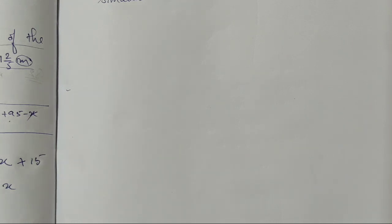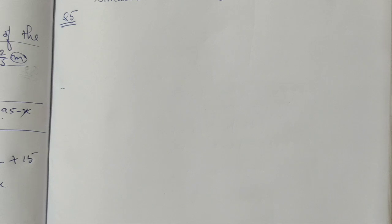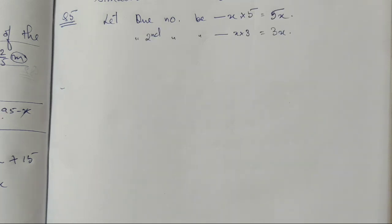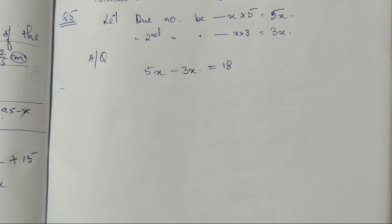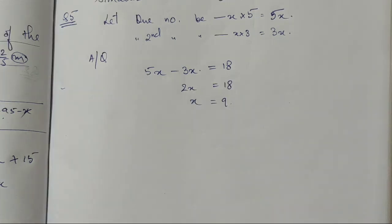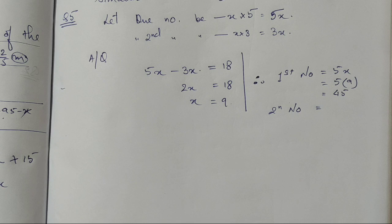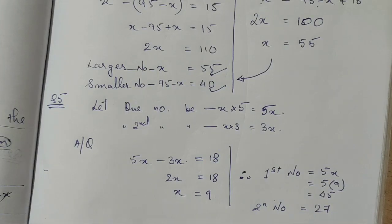Question 5: two numbers are in the ratio 5:3 and their difference is 18. We take the numbers as 5x and 3x. Since 5x is greater, the difference is 5x minus 3x = 18, so 2x = 18 and x = 9. Therefore the first number is 5 × 9 = 45 and the second is 3 × 9 = 27. The difference is indeed 18, so the answer is correct. That's all for today — the remaining questions of Exercise 2.2 will be covered in the next video.